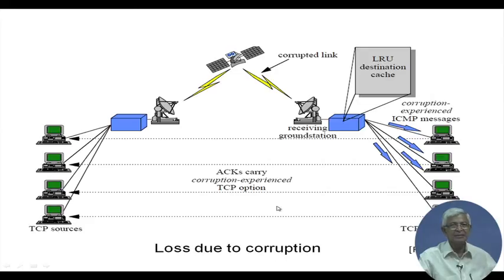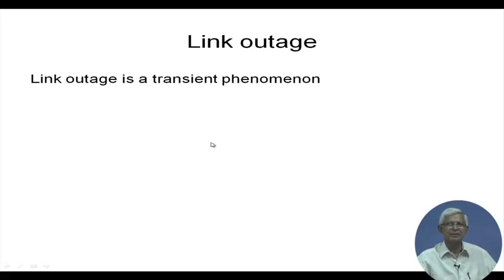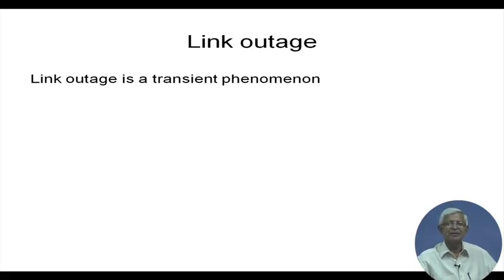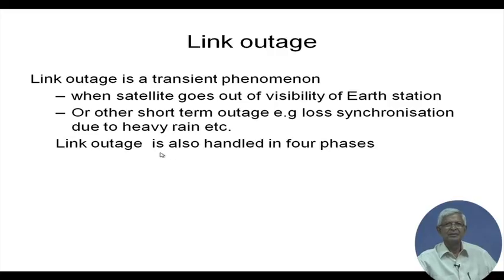Now considering another possibility: link outage. Link outage is a transient phenomenon — for a short duration, the link may go down when the satellite goes out of visibility of the station due to shadowing by an object, loss of synchronization, or heavy rain. Link outage is handled in a similar four-phase approach as corruption.